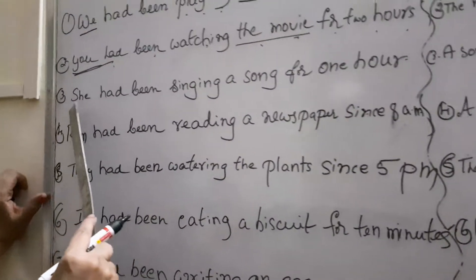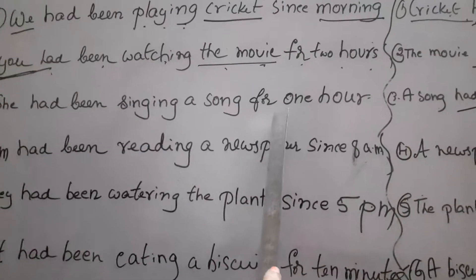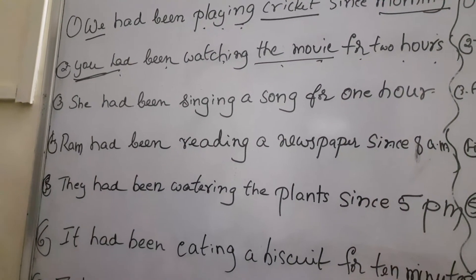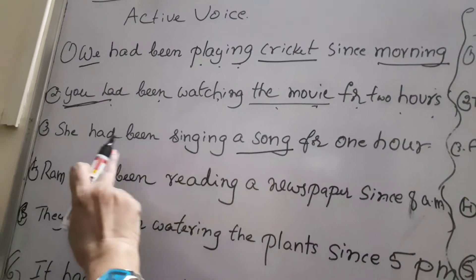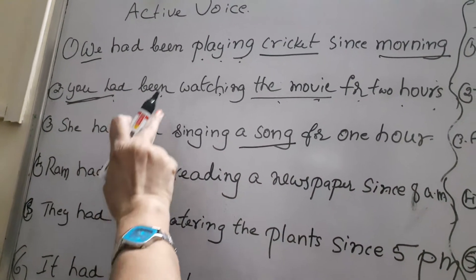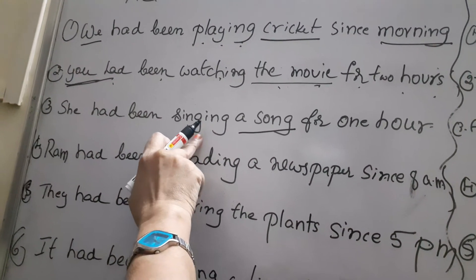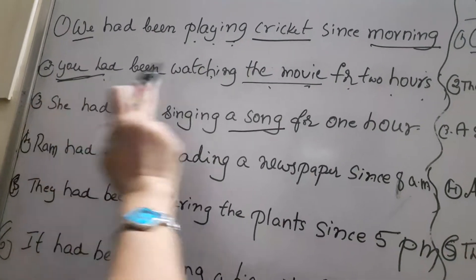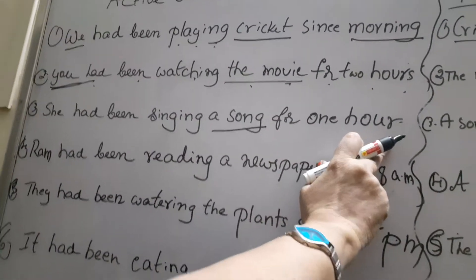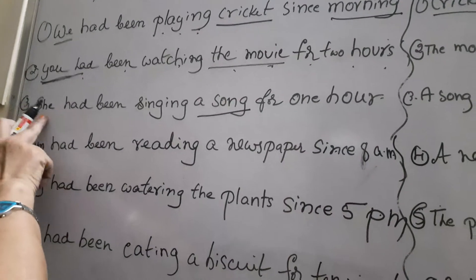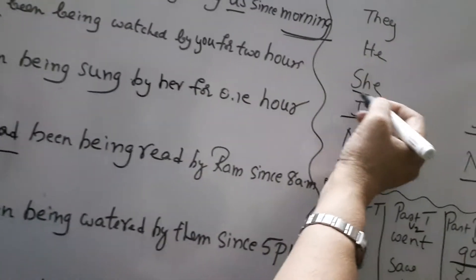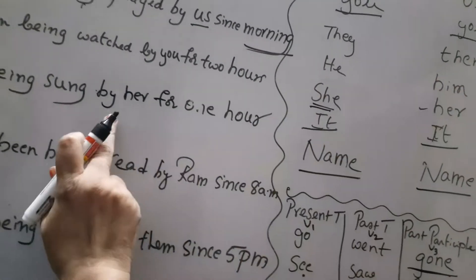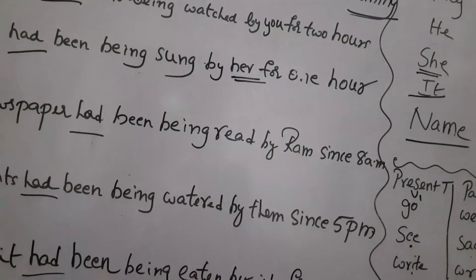Third question: 'She had been singing a song for one hour.' Object is 'a song.' A song had been being sung by her for one hour. The changed form of the personal pronoun 'She' is 'Her,' so we have written 'her.'